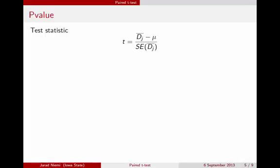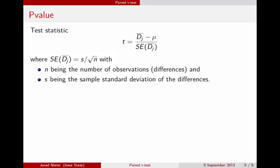Alright, in order to calculate a p-value to test these hypotheses, we need a test statistic. In this case, the test statistic is going to be the average difference minus the expected average difference, that's mu, divided by the standard error of the average difference. The standard error of the average difference is just s divided by the square root of n, where s is the sample standard deviation, and n is the number of observations.